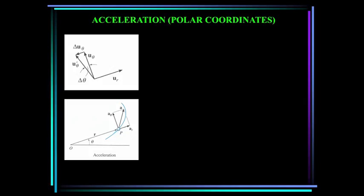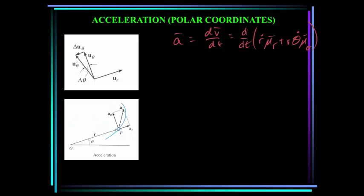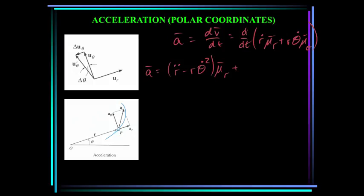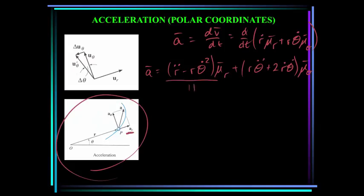Now let's talk about the acceleration. The acceleration is the time rate of change of the velocity. From the previous slide, I can write this as d/dt of the velocity: r-dot times u sub r plus r times theta-dot times u sub theta. When you take this derivative and do some manipulation, it turns out that the acceleration equals (r-double-dot minus r times theta-dot squared) in the u sub r direction, plus (r times theta-double-dot plus 2 times r-dot times theta-dot) in the u sub theta direction. The radial component a sub r is the first part.